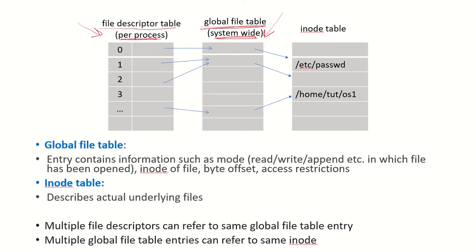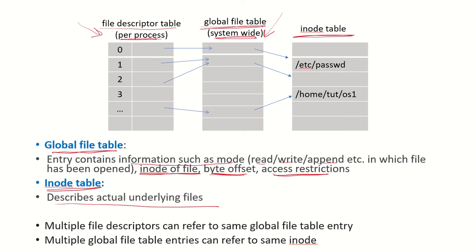The global file table contains information about each file, including: the mode in which the file was opened (read, write, append, etc.), the inode of the file, the byte offset indicating where the current read/write pointer is, and the access restrictions — whether the file is read-only, write-only, or has both permissions. The inode table is the table that actually describes the underlying files; we will discuss inodes in more detail when covering the file system.